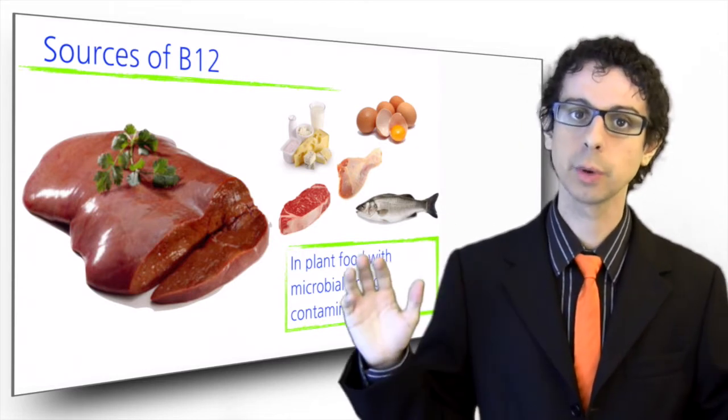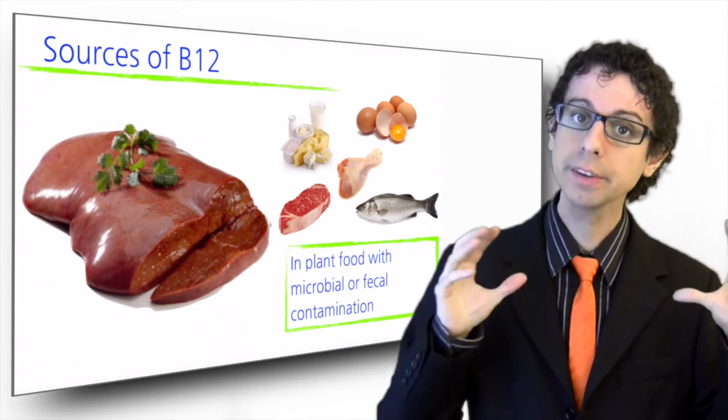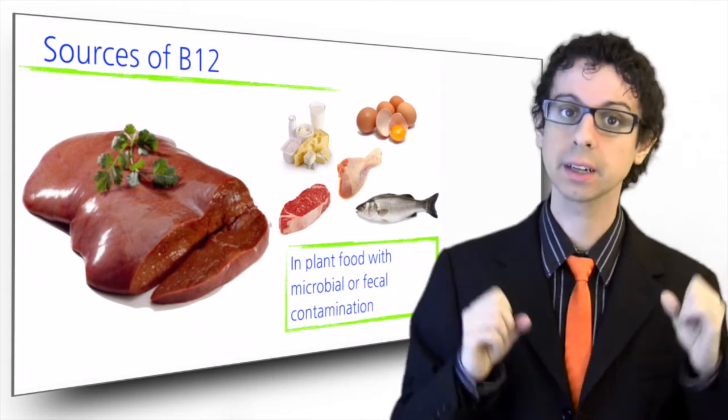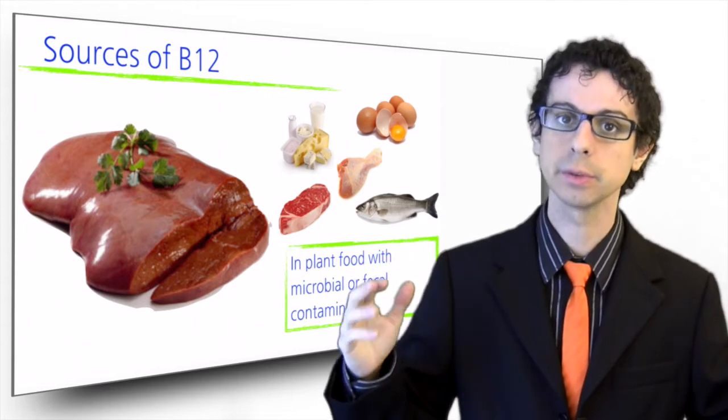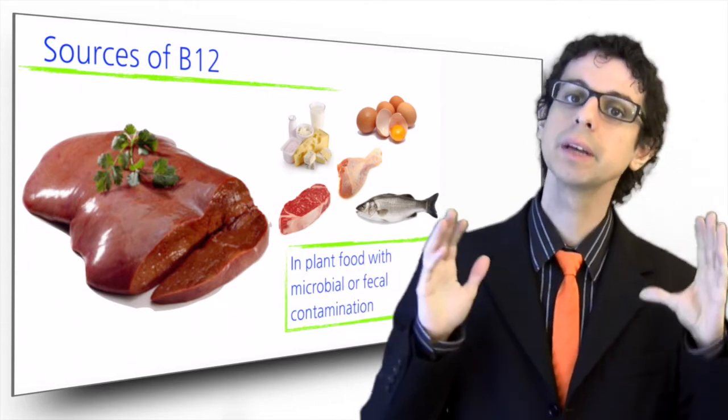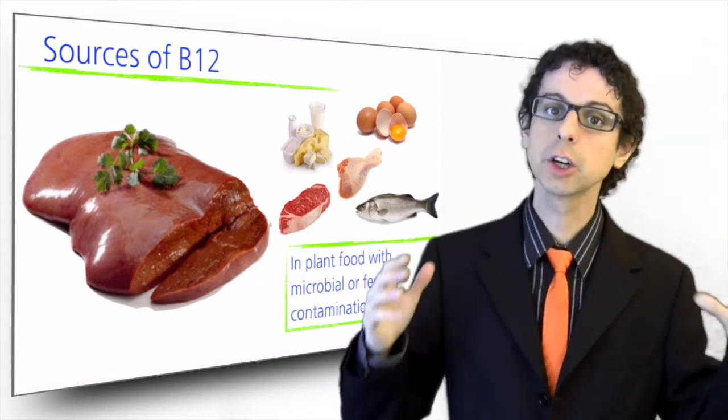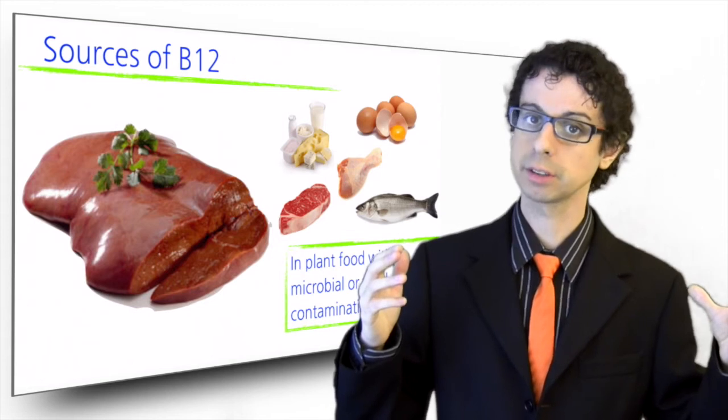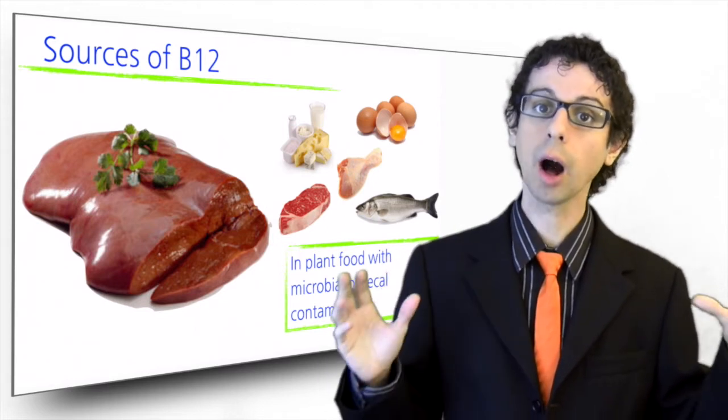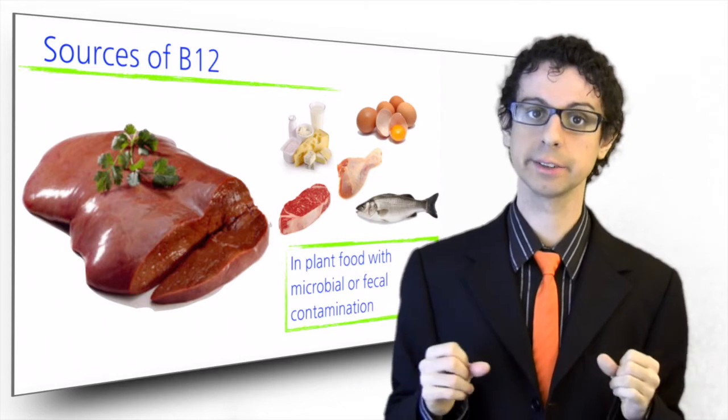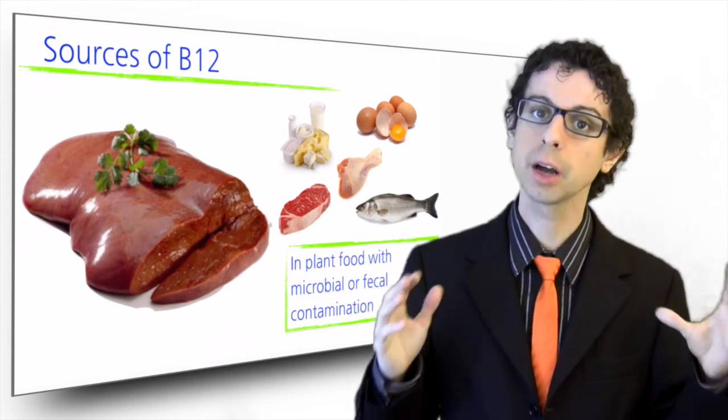Instead, you will not find any vitamin B12 whatsoever in any plant foods. Not occurring naturally, that is. However, small amounts of it are often present as a result of environmental, microbial or fecal contamination, and it is mostly for this reason that strict vegans can go on for years without animal foods, without incurring B12 deficiencies. However, because its deficiency is a really serious problem and can go undetected until it's too late, vegans are encouraged to either take a B12 supplement, or a B12 fortified food, such as fortified breakfast cereal, B12 rich yeast, or B12 rich algae or seaweeds, all products that are rich in vitamin B12 because of yeast or bacterial fermentations. If they really do not want to, they should at the very least check their B12 status periodically with blood tests.